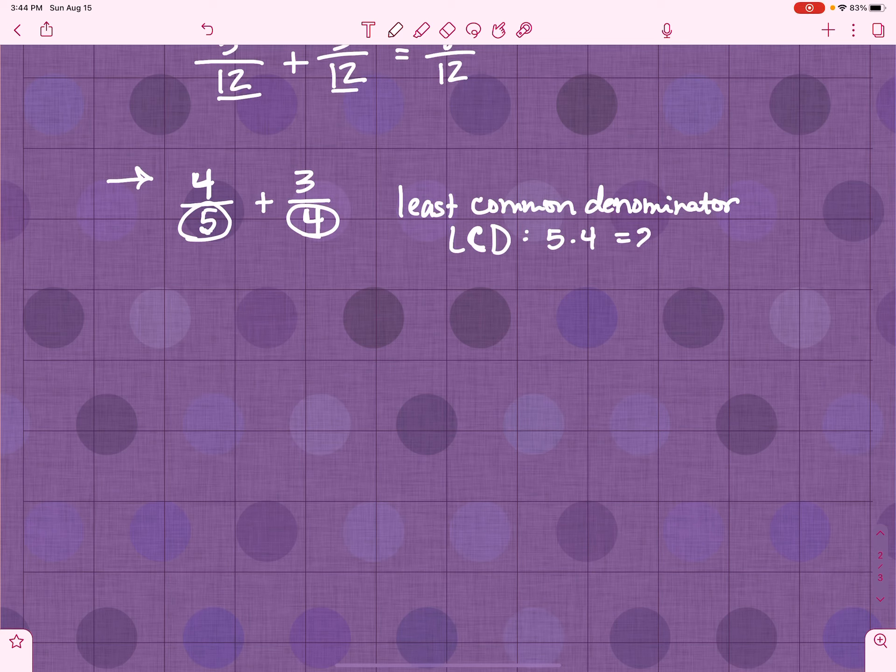5 times 4 is 20. There's not a smaller number that they are both a factor of. So, you have to change this denominator to 20, and this denominator to 20. How are you going to do that?